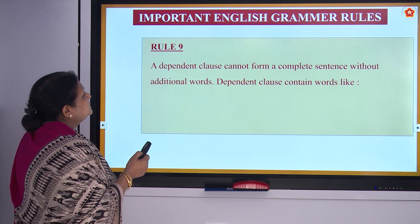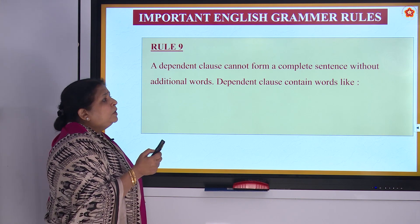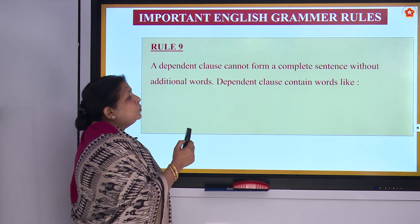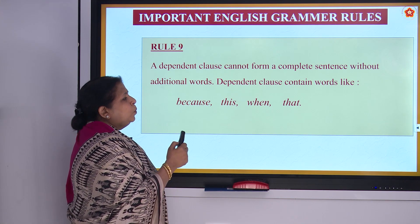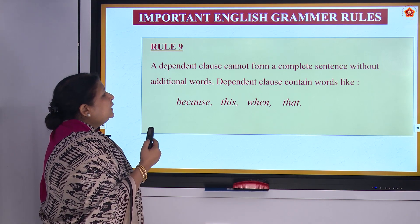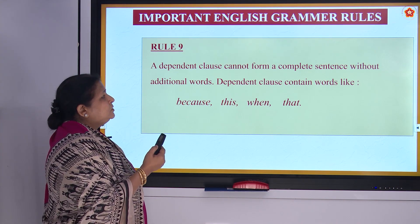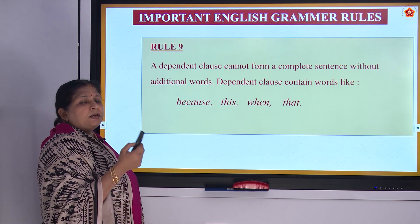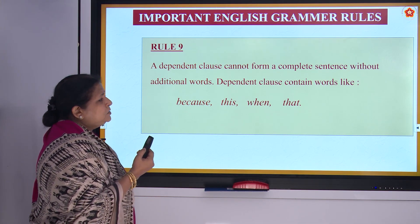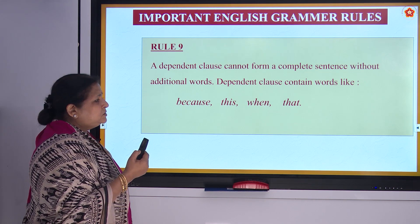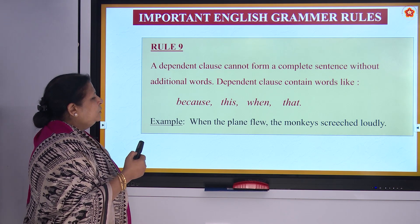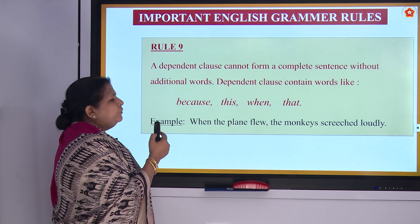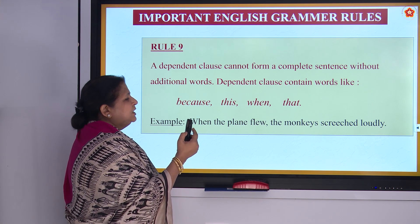Rule number 9: A dependent clause cannot form a complete sentence without additional words. Dependent clauses contain words like 'because,' 'this,' 'when,' and 'that.' The meaning is incomplete without these words. Example: 'When the plane flew, the monkeys screeched loudly.'